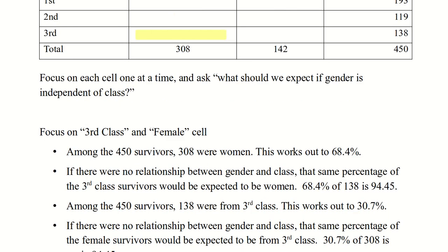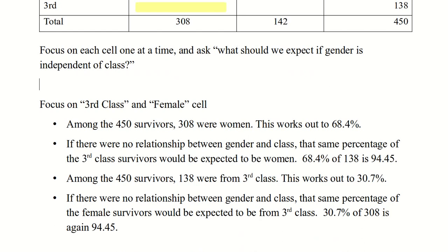Now we can work out this number the same way by asking a different question. Among the 450 survivors, 138 were from third class. That's 30.7%. Again, if there were no relationship between gender and class, that same percentage of female survivors would be expected to be from third class. 30.7% of the 308 female survivors is again 94.45.